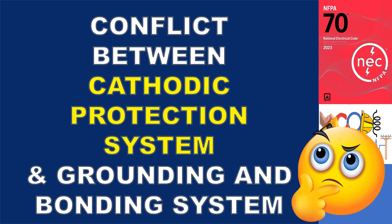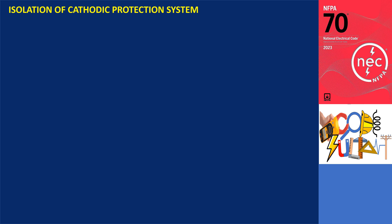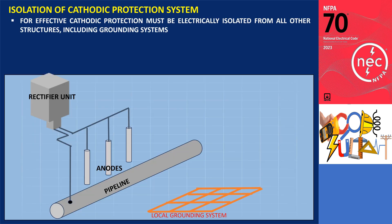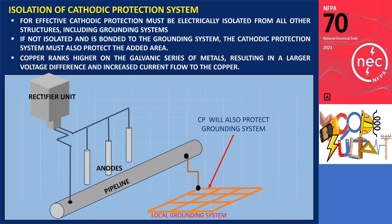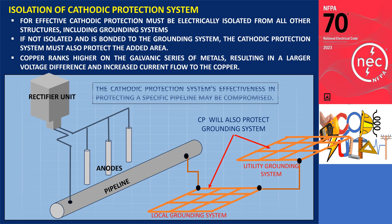While cathodic protection is vital, it can conflict with another important requirement: safety grounding and bonding. For effective cathodic protection, the structure or pipe being protected must be electrically isolated from all other structures, including grounding systems. If the structure is not isolated and is bonded to the grounding system, the cathodic protection system must also protect the added area. Moreover, most grounding systems employ copper, which ranks higher on the galvanic series of metals, resulting in a larger voltage difference and increased current flow to the copper. Additionally, when the grounding system is bonded to the utility grounding, the cathodic protection system also ends up protecting them. As a result, the cathodic protection system's effectiveness in protecting a specific pipeline may be compromised, leading to a shorter anode lifespan or higher rectifier output.